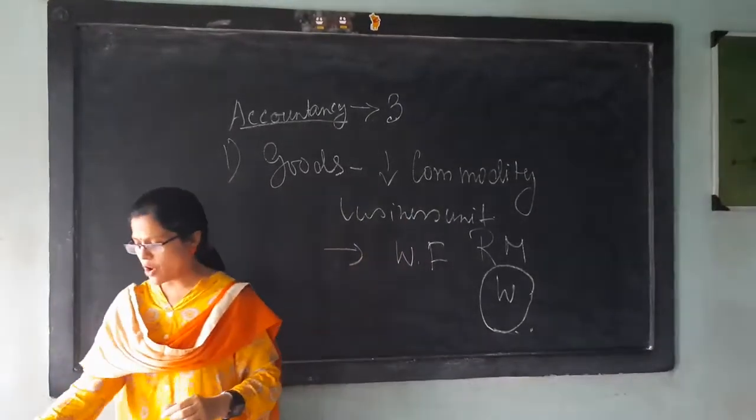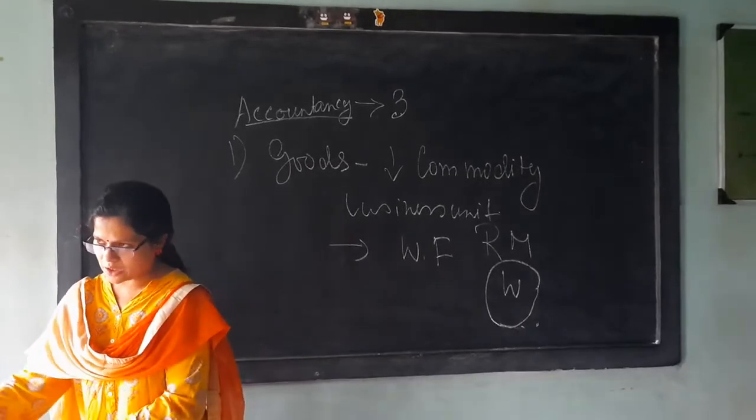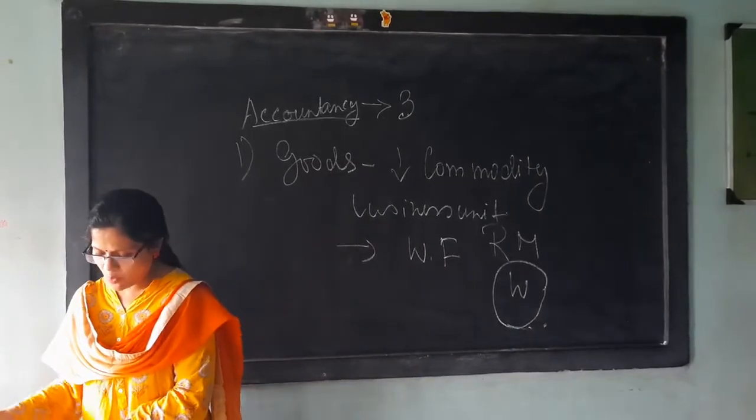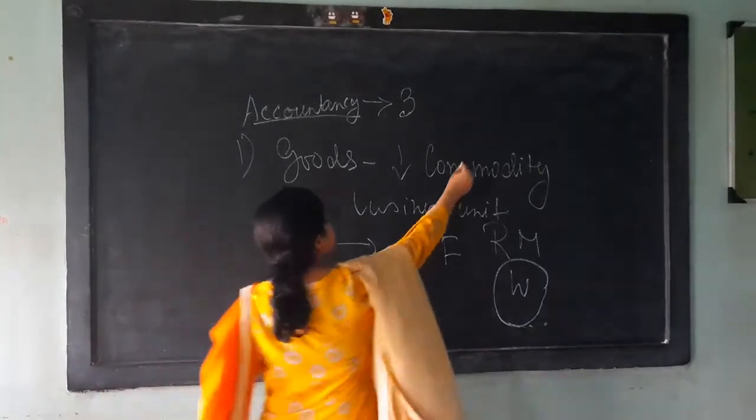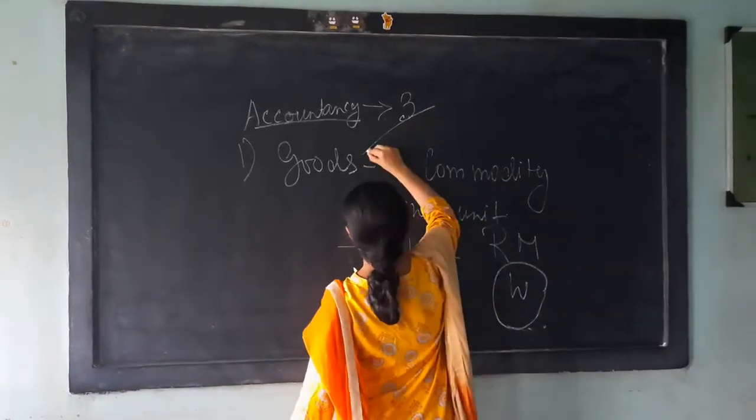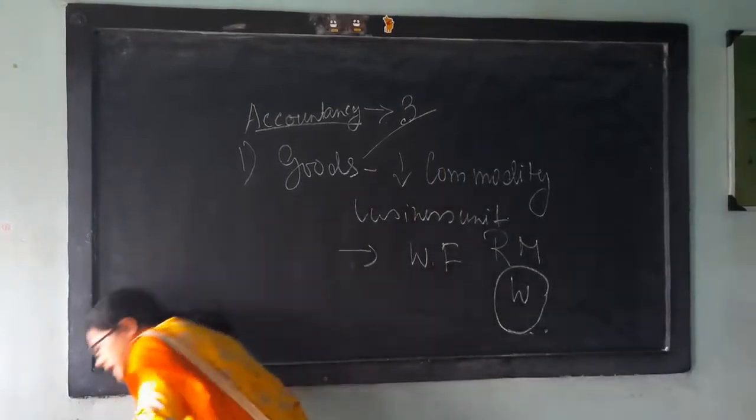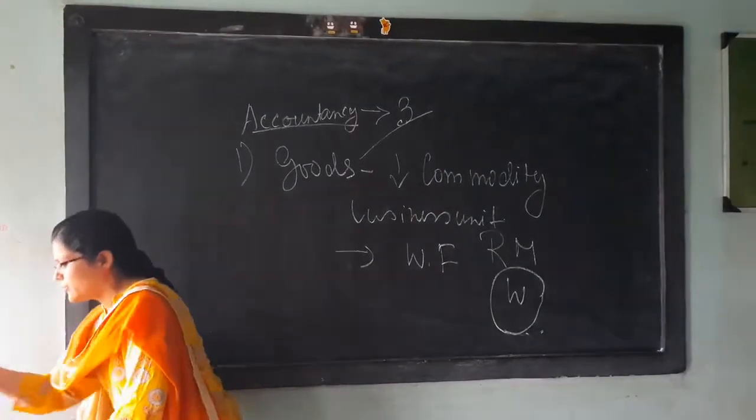As goods, there are two types of goods. One is durable goods and one is non-durable goods. The goods are having two types. One is durable goods, one is non-durable goods.